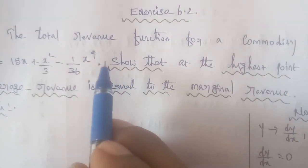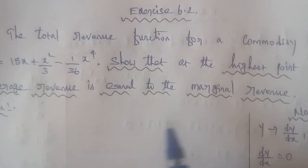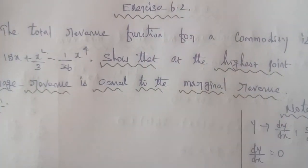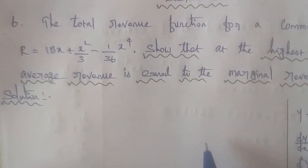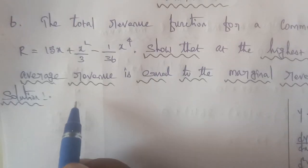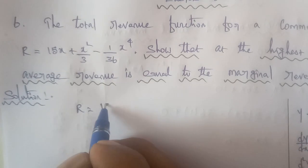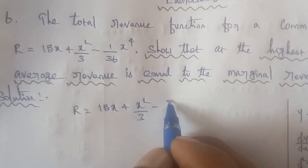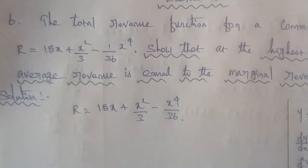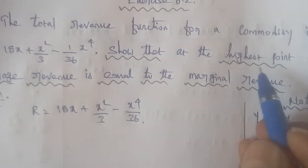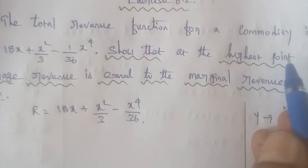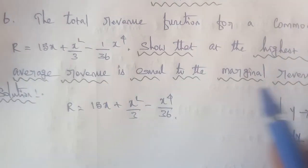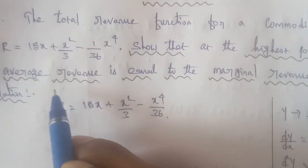Given this, we need to show that at the highest point of the average revenue, the average revenue is equal to the marginal revenue. So first, we note the revenue function: R = 15x + x²/3 − x⁴/36.